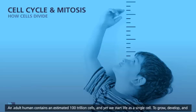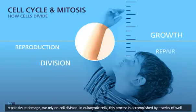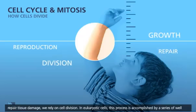An adult human contains an estimated 100 trillion cells, and yet we start life as a single cell. To grow, develop, and repair tissue damage, we rely on cell division.